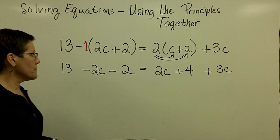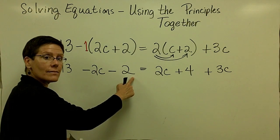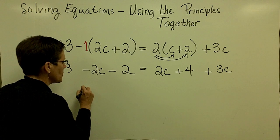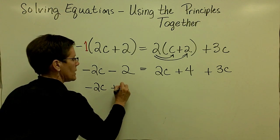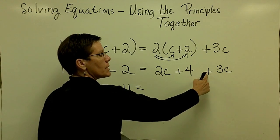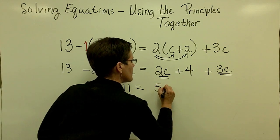Collect your like terms. On the left side, 13 minus 2 is 11. I like to put the term with the variable in it first and then bring the 11 down. And then 2c plus 3c, again, like terms, they add to be 5c.